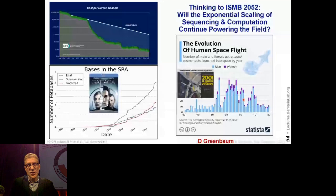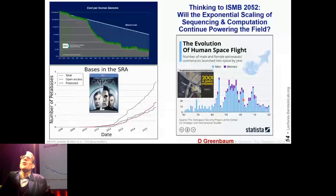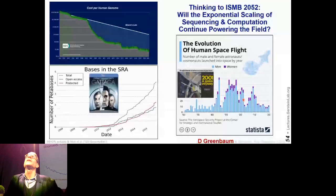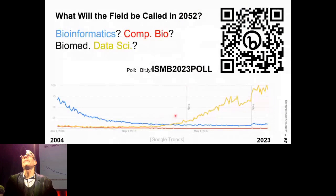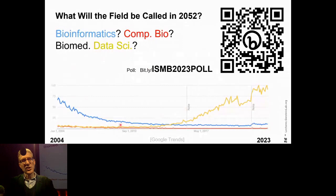That brings me to: what are we going to call our field? In 2052, are we going to call it computational biology, bioinformatics, biomedical data science, or something else? I talked about this a lot with my lab and we made up a poll which you can participate in. I'm more enthusiastic about the data science nomenclature — but that's for a lot of people to decide. You can just look at the Google Trends analysis of that. Please participate in our poll.